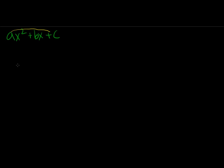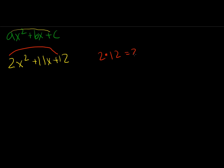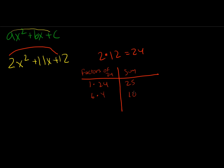Here's an example: we have the problem 2x squared plus 11x plus 12. We start by multiplying a times c, so 2 times 12 gives us 24. Now let's find factors of 24 that add up to 11. Factors 1 and 24 add up to 25, and 6 and 4 add up to 10. But 8 times 3 equals 24 and adds up to 11, so those work.